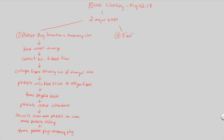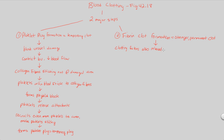Simultaneously, the second major step — fibrin clot formation — will be preparing itself. A fibrin clot is different from a platelet plug because it is a stronger, more permanent clot. To form a fibrin clot, there are molecules known as clotting factors. These clotting factors — along with a couple of other compounds — are going to be released mainly by the platelets themselves.